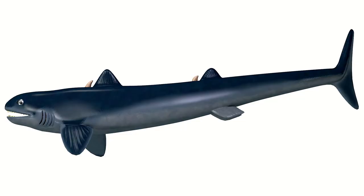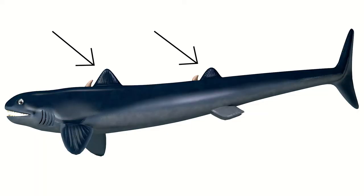Let's look at some of the features of the Cladoselache and see why it is considered the very first shark species. First of all, it has rigid pectoral fins — a key feature of sharks, as they cannot move their pectoral fins like bony fish can. Cladoselache also had two dorsal fins, which is again a common feature of a lot of our modern day sharks.